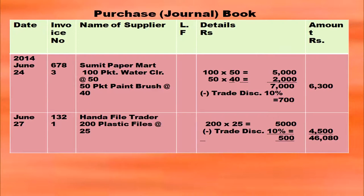Then from Honda File Trader, 200 plastic files purchased at rupees 25: 200 × 25 = 5,000. Trade discount at 10 percent: 5,000 × 10/100 = 500. So 5,000 minus 500 = 4,500. Considering all the previous transactions also, the purchases book will have a total of 46,080. In the name of the supplier column you have to write purchases account, and in the date column the last day of that particular month: June 30th, purchases account 46,080.